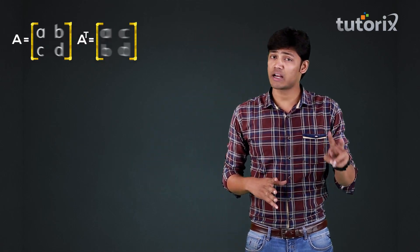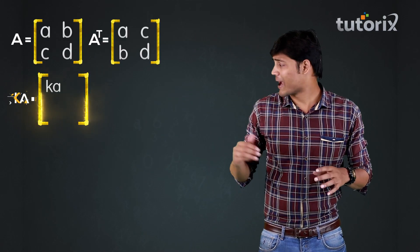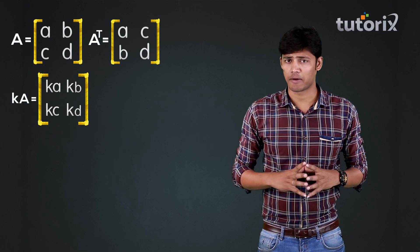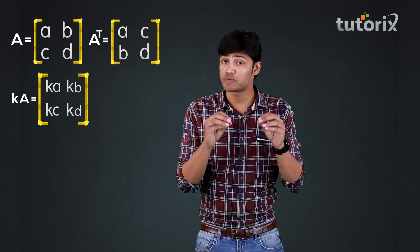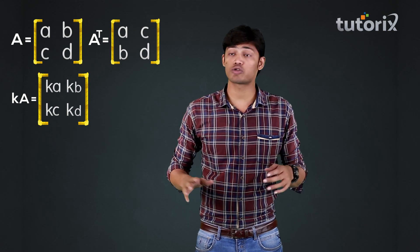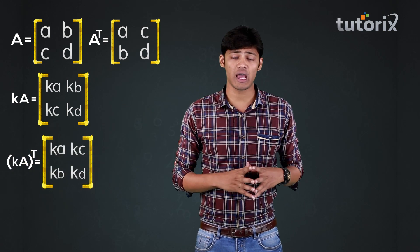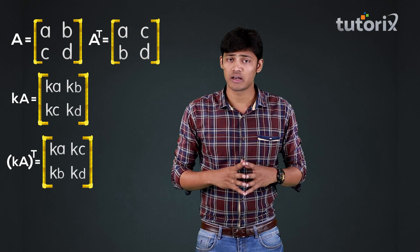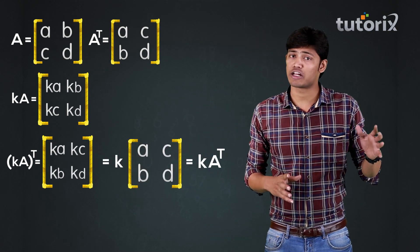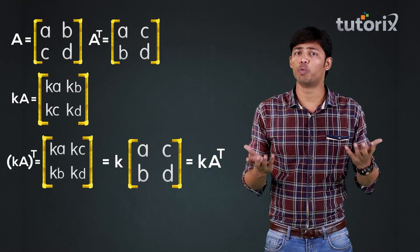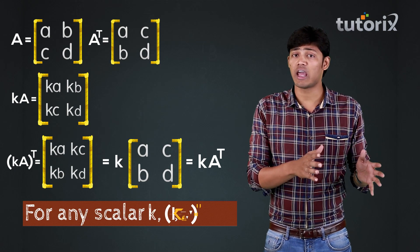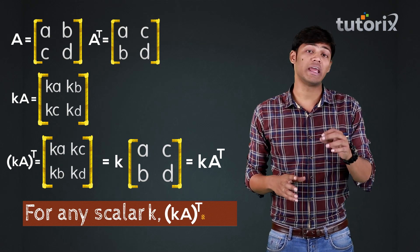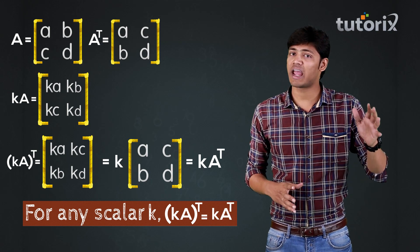Let us move on to the second property. We will multiply the matrix A with the scalar K and get the matrix K times A. The transpose of this matrix K times A will be the same as K times A transpose. So we can conclude that for any scalar K, K times A whole transpose will be equal to K times A transpose.